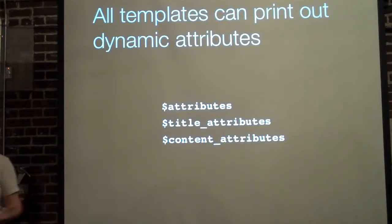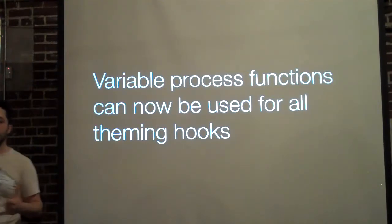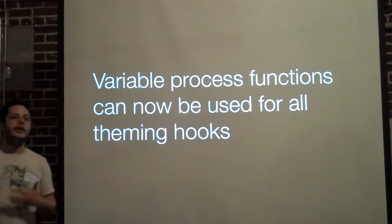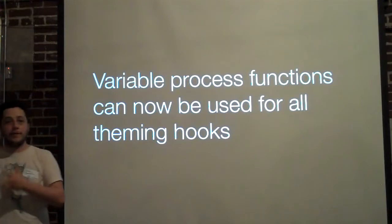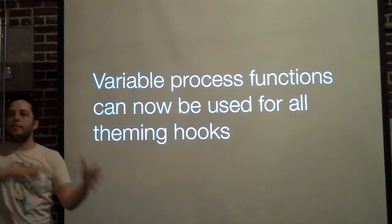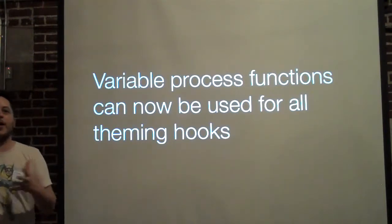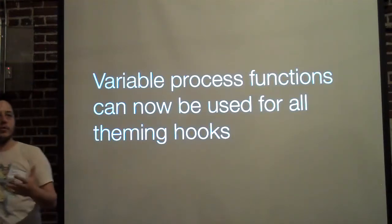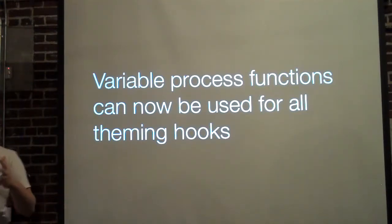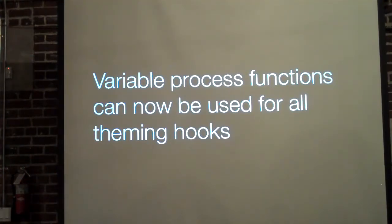If this sounds a little too geeky, don't worry — you'll get used to it when you start working on Drupal 7. Process functions can now be used for all theming hooks. In Drupal 6, adding variables would only affect templates directly. So if you wanted to tweak variables but had no template — everything running through template.php — you were out of luck. Now in Drupal 7, we get to do all those tweaks even if we don't have a single template inside our theme and it's all PHP logic based.